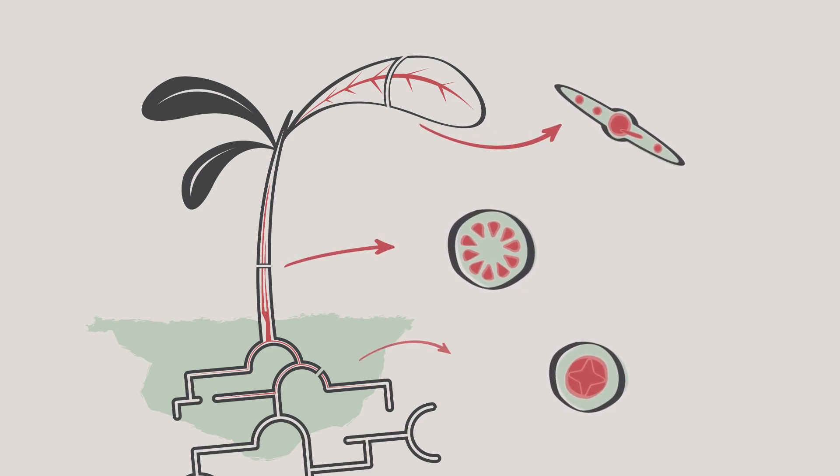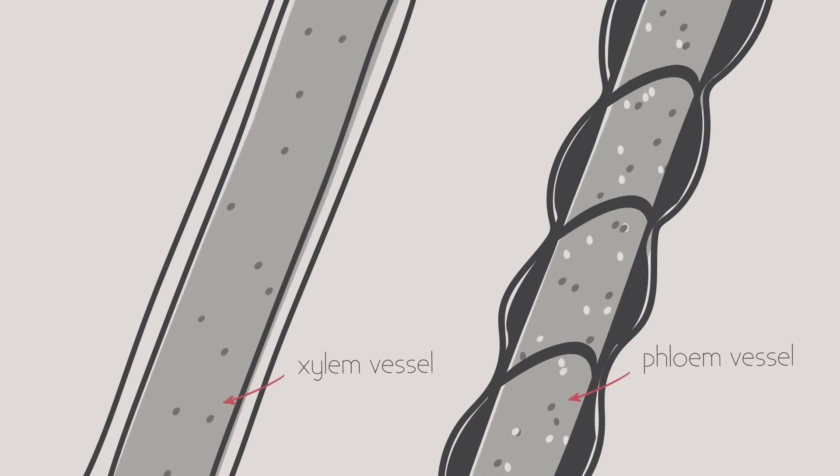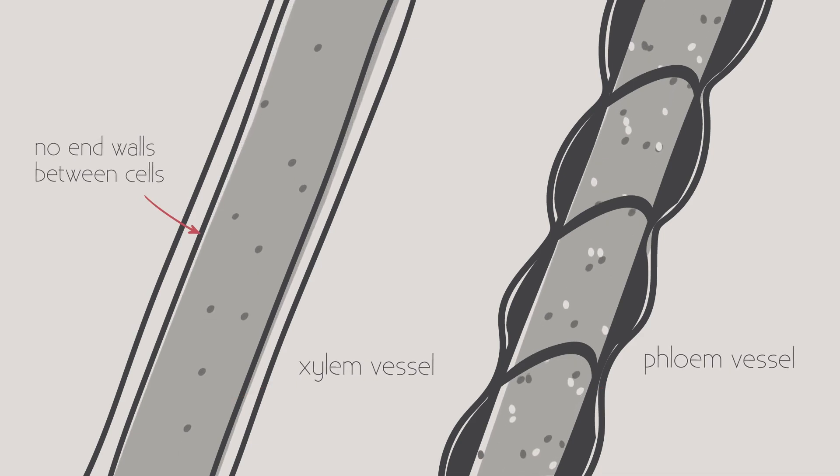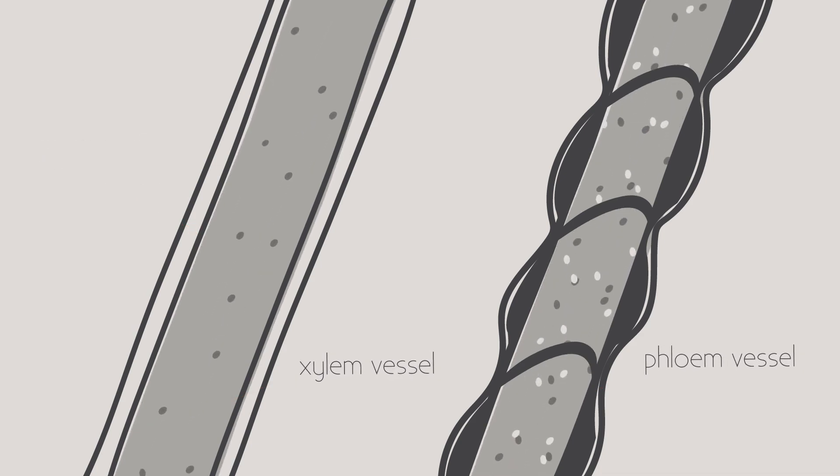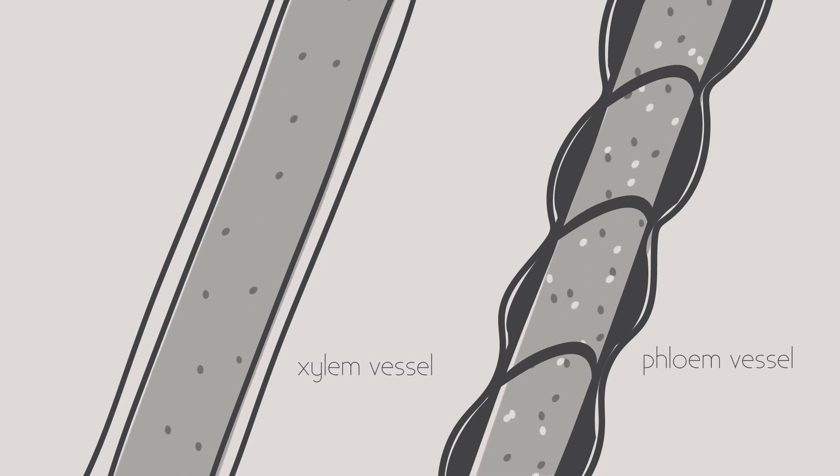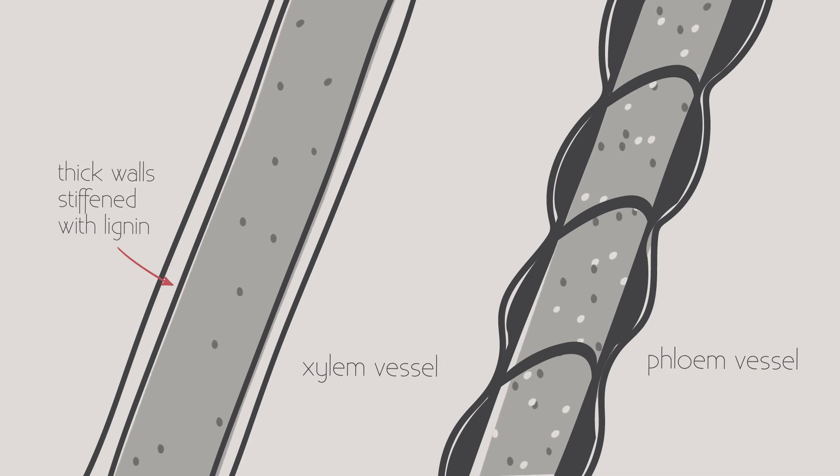Both the xylem and the phloem are made up of rows of cells that form a continuous tube running the whole length of the plant. The xylem vessels are made of elongated dead cells that are impermeable to water and have walls containing lignin, a woody material.